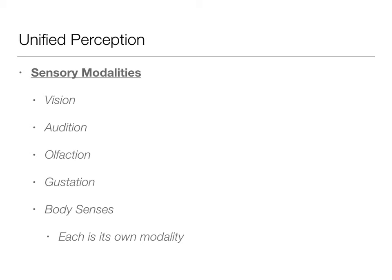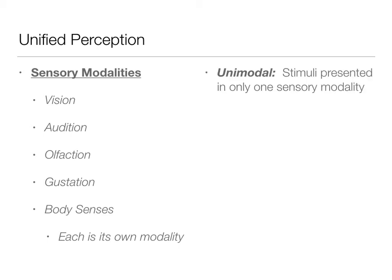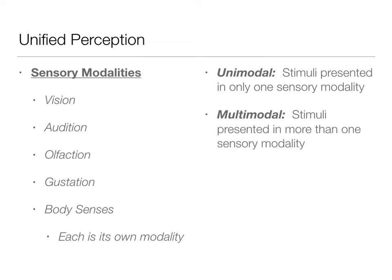It talks about that throughout the course, but we're going to really focus on it here. Unimodal stimuli are stimuli presented with only one sensory modality. If you've got headphones on and the only way information is being presented to you is through your ears, that is unimodal presentation. Multimodal means more than one sensory modality is being used. Bimodal refers to two modalities, but bimodal presentation is still multimodal.